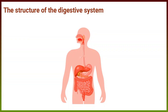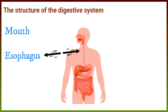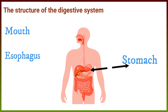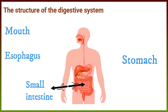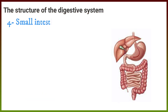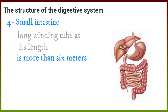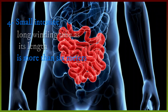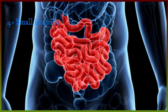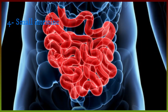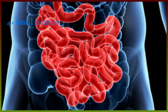In the previous video we learned the structure of the digestive system. We discussed the first three organs: mouth, esophagus, and stomach. The fourth organ is the small intestine, which is a long winding tube more than six meters in length. The small intestine completes the digestion of different types of food, breaking food down into simple nutrients.